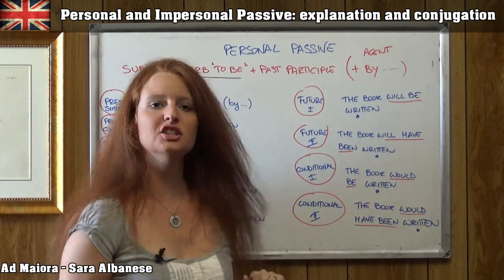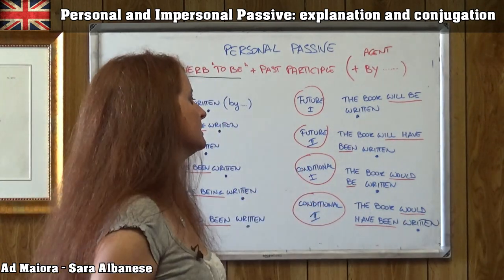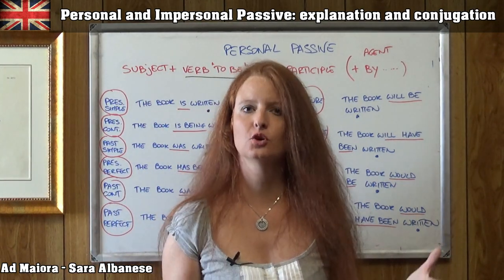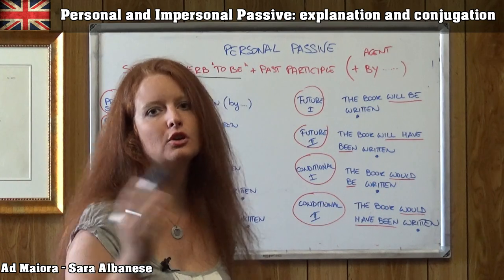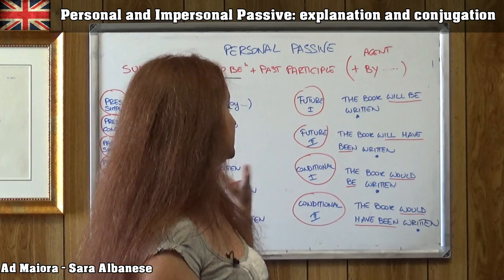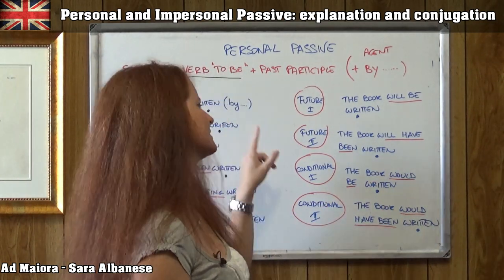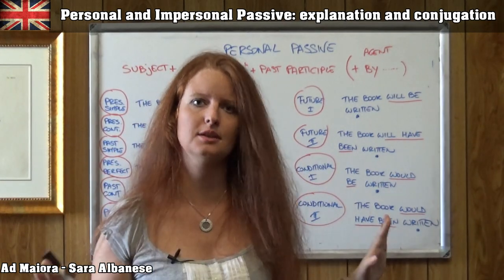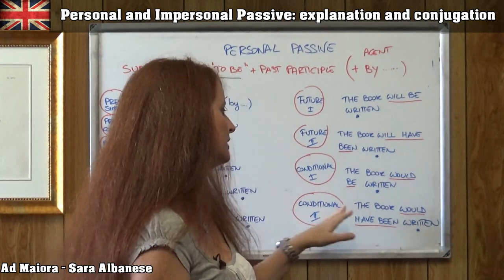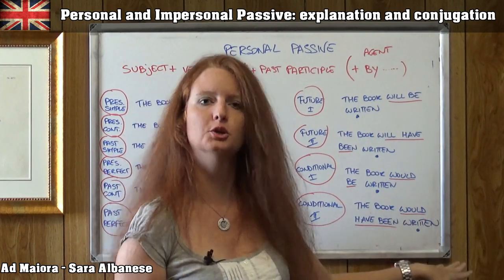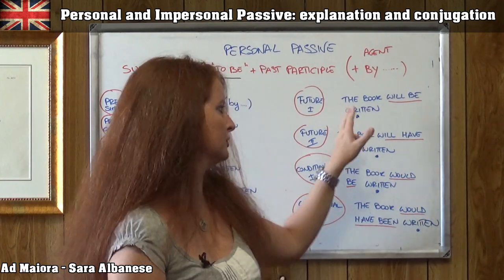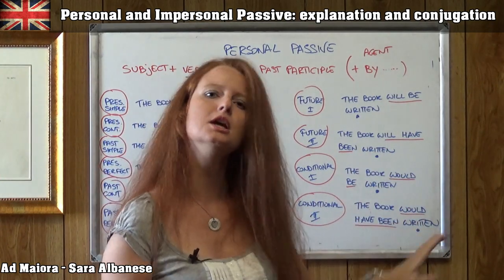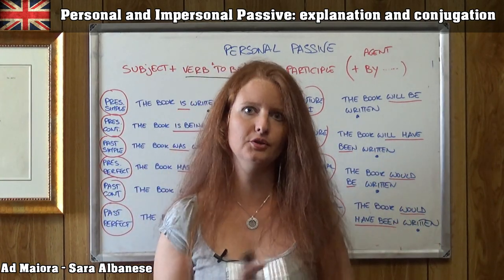Then the two conditionals. Conditional one: 'the book would be written.' 'Would' forms the conditional and takes the base form, as usual. Conditional two is exactly the same structure as future two: 'the book would have been written.' The structure is exactly the same — I just have 'would' here instead of 'will.'